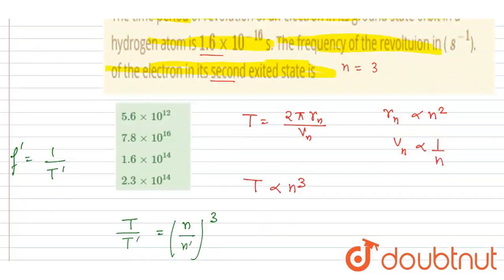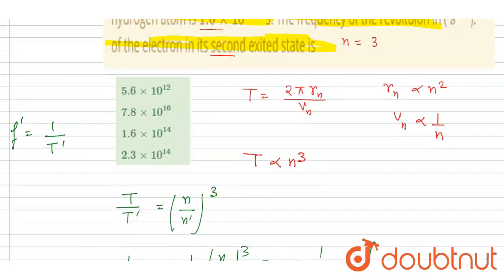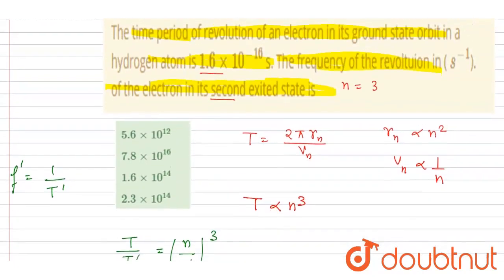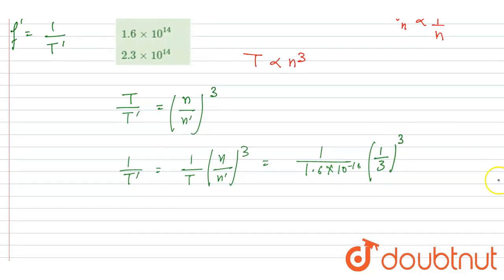This 1.6 into 10 to the power 16, so I will write it will be 10 to the power minus 16. N by n dash, right? So initially the n was 1, finally it is 3, so 1 by 3 whole cube. This will be n by n dash.